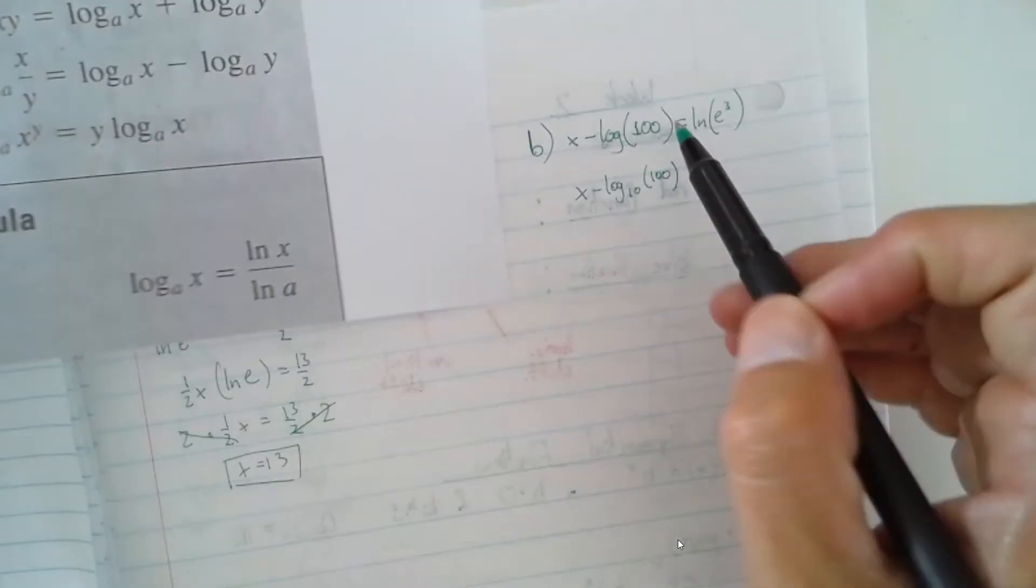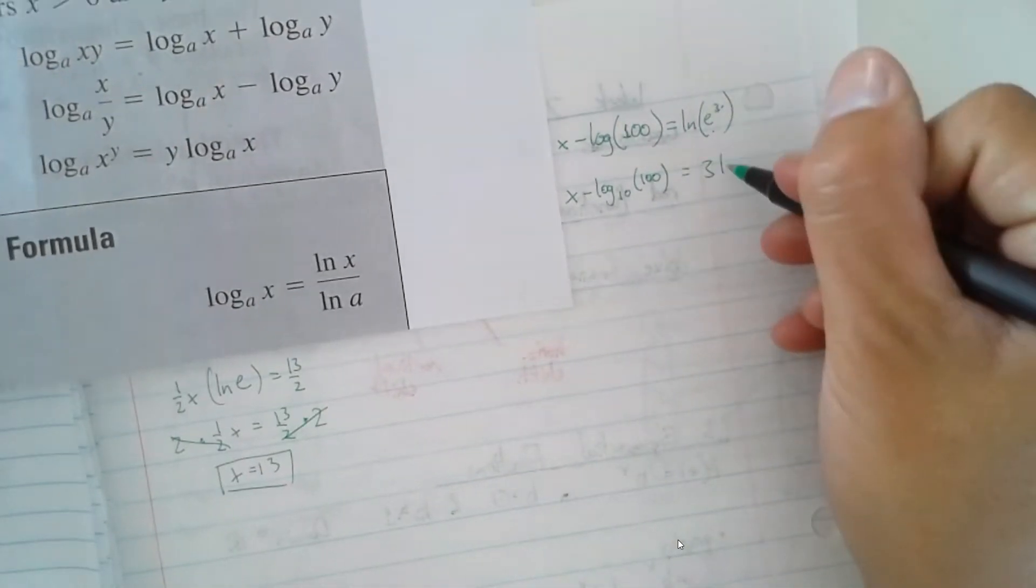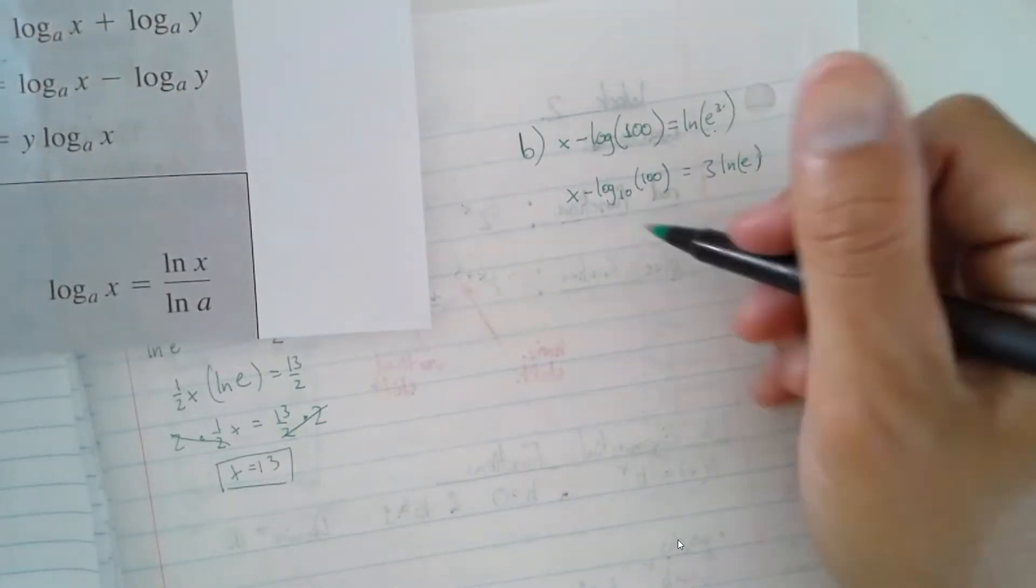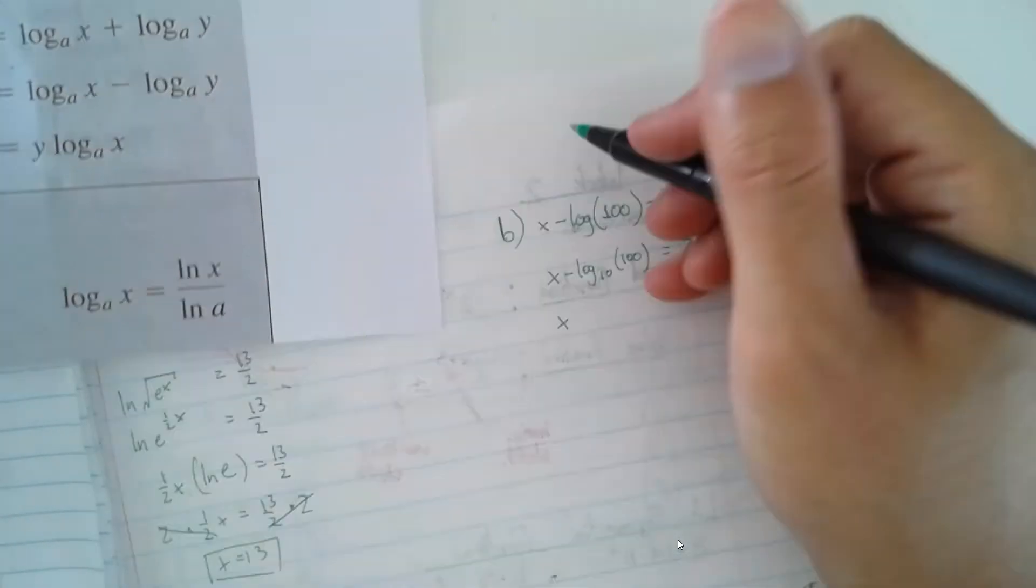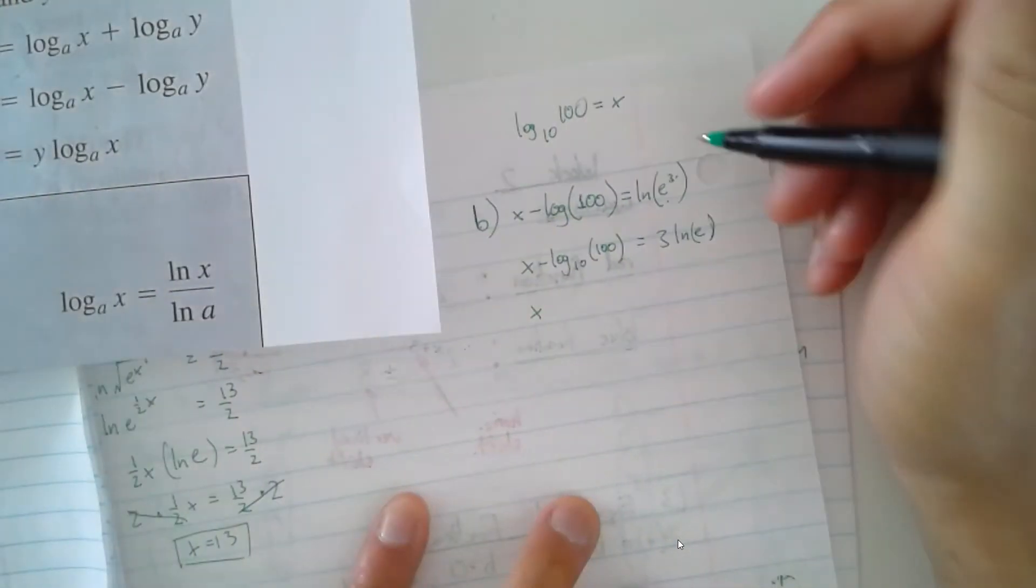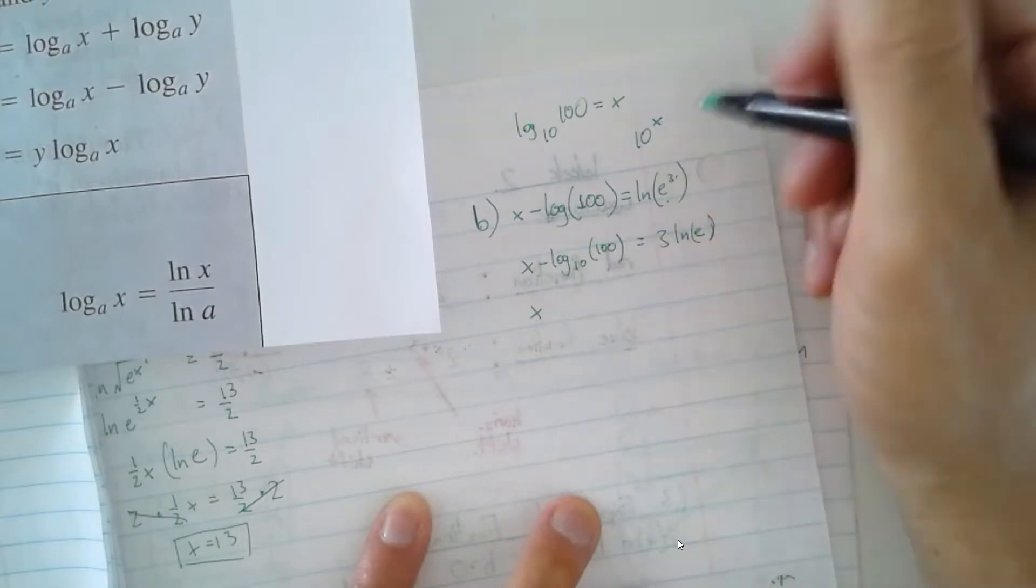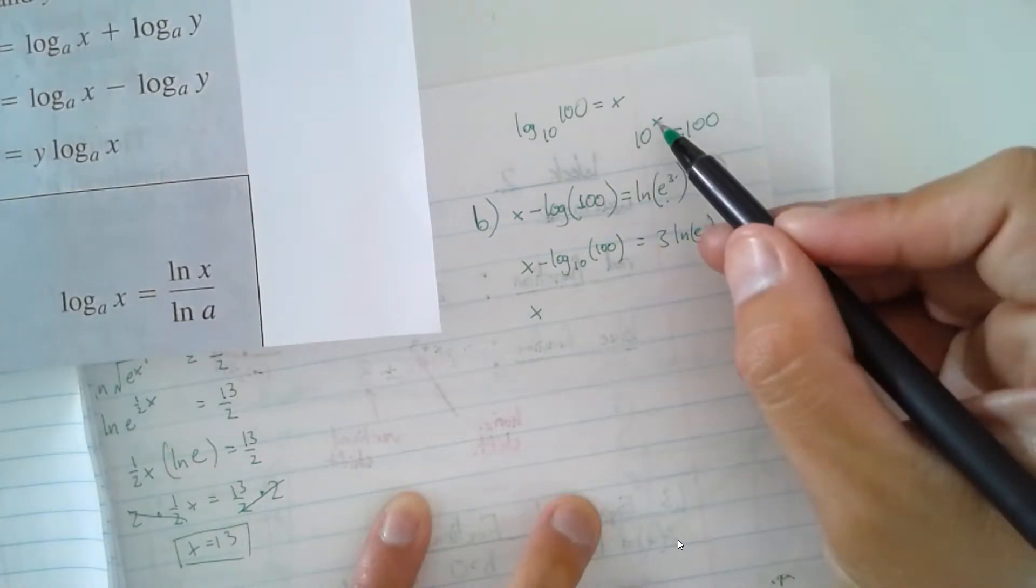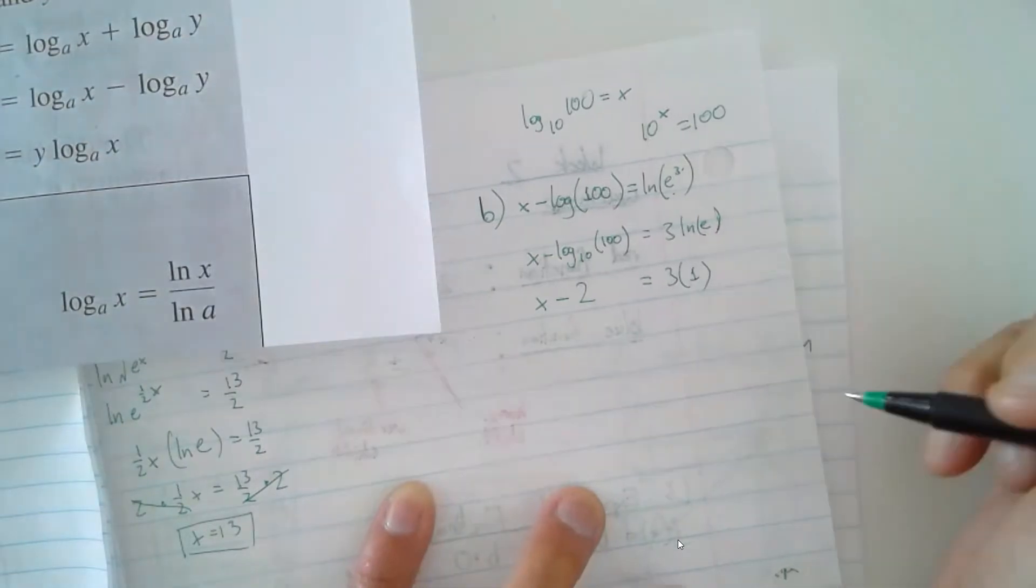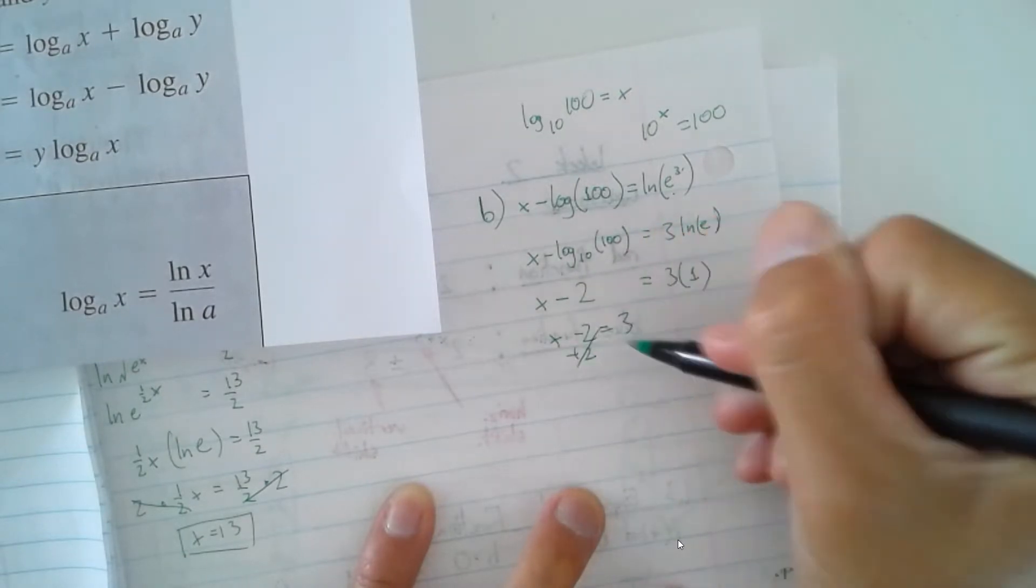So the power rule basically says that the exponent, if you're taking the log of a base with an exponent, that exponent can actually drop to the front. So it's going to be equivalent to the same thing. It's going to be 3 times log base E of E. And if you don't remember logarithms, just a quick review. If you're taking the log of 10 equals 100 to get an x, you're asking what is the exponent going to be equal to to make 10 to the power of whatever exponent equal to 100? Well, that's really simple. It's just 2. So it's going to be x minus 2 equals 3 times 1, which is basically x minus 2 equals 3. Add 2 to both sides and you get x equals 5.